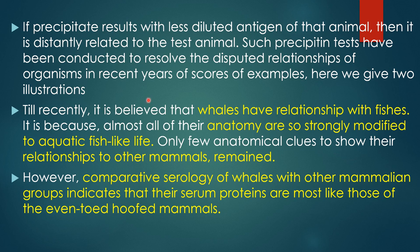Such precipitating tests have been conducted to resolve disputed relationships among organisms. Here are two illustrations. Until recently it was believed that whales had a relationship with fishes, because almost all of their anatomy is strongly modified for an aquatic, fish-like life, with only a few anatomical clues to their relationship with other mammals. However, comparative serology of whales with other mammalian groups indicates that their serum proteins are most like those of the even-toed hoofed mammals.